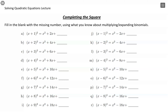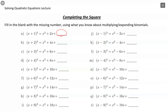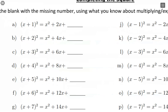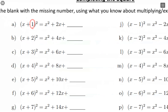This first column here is looking at our factored form — we have x plus 1 squared, x plus 2 squared. And what we want to do is relate this factored form to its expanded form. Something we want to focus on is the number that shows up at the end, which comes from this number squared — like 1 squared, 2 squared, 3 squared — so we're going to get these square numbers coming through.